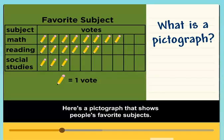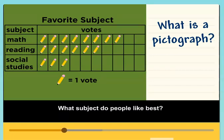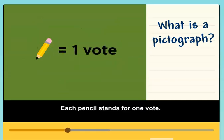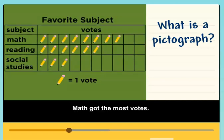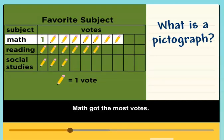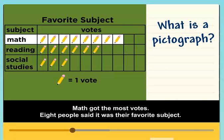Here's a pictograph that shows people's favorite subjects. What subject do people like best? Each pencil stands for one vote. Math got the most votes — eight people said it was their favorite subject.